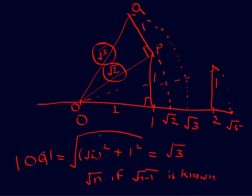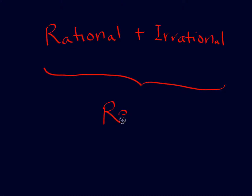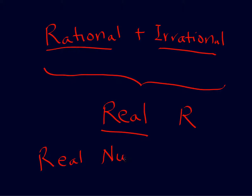Each point on the number line is either rational or irrational, and together these make the complete number line. All of these are called real numbers, typically denoted by R. So real numbers are either rational or irrational, and each can be represented on a number line — and every point on a number line is either rational or irrational. We call this the real number line. We'll learn more about rational and irrational numbers and their decimal representations in subsequent sessions.